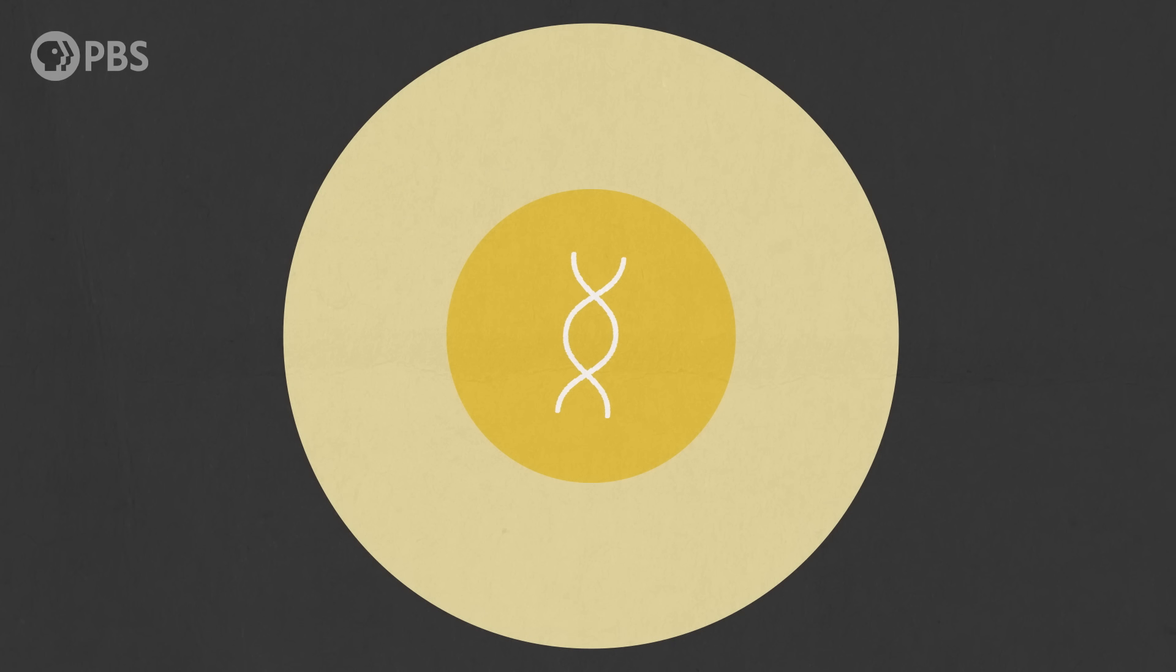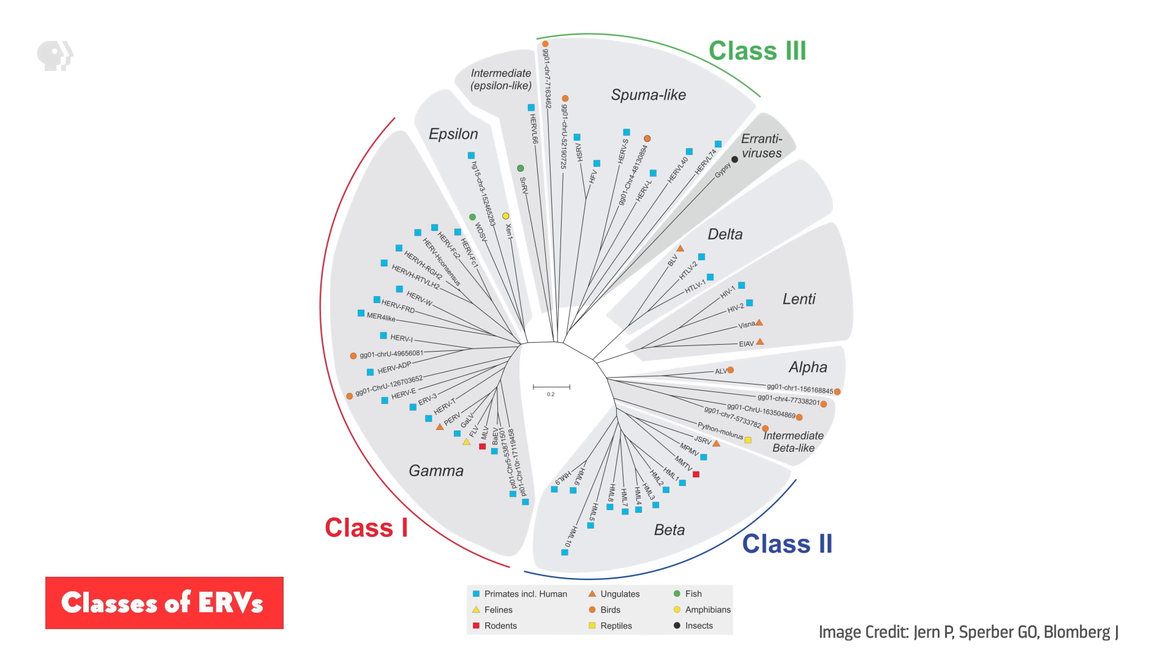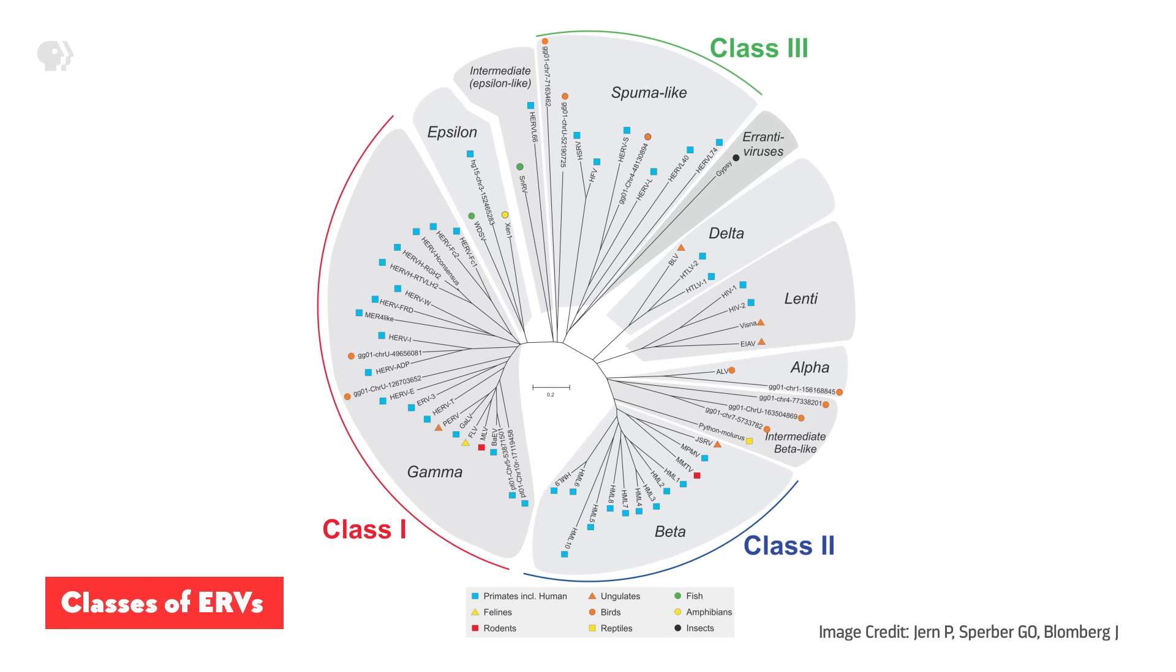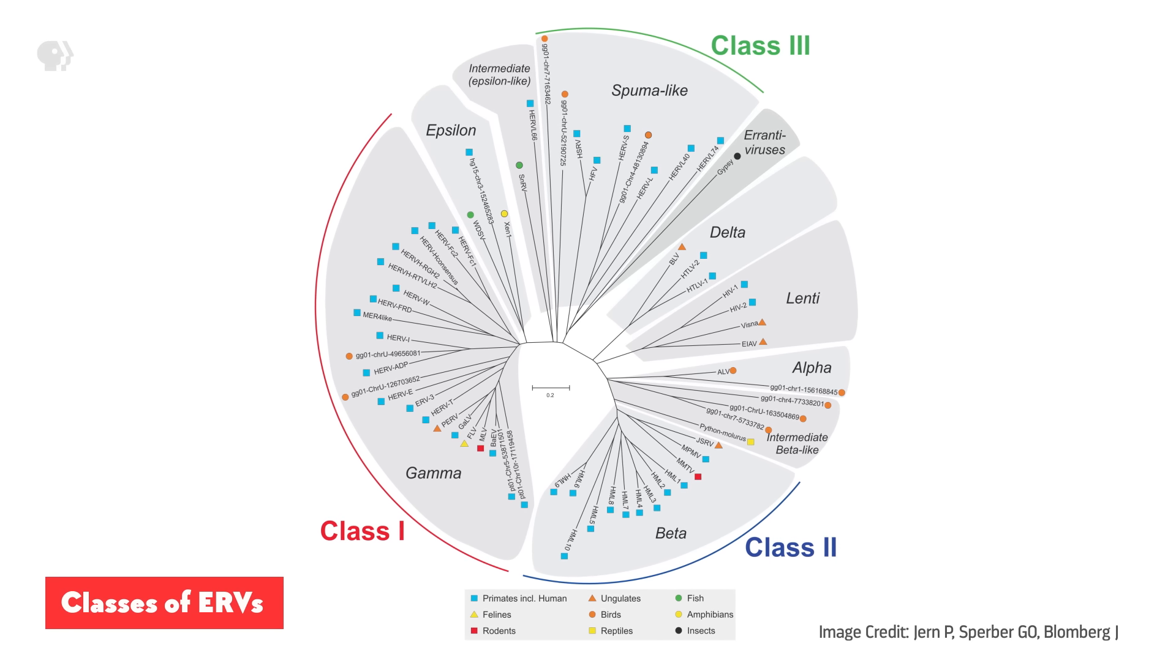Because everything has to go just right for this to happen. First, the virus has to integrate into the DNA of the sperm or egg cells at just the right spots to not kill those cells or disrupt how they work. Then those cells have to be the lucky few that actually end up forming a fertilized egg, which is what allows the ERV to be passed down to the next generation. And then it has to keep getting passed on, even as these organisms change and evolve over time. But over millions of years, these rare events have happened often enough to leave a viral fossil record behind.